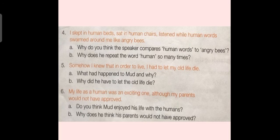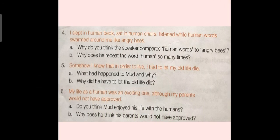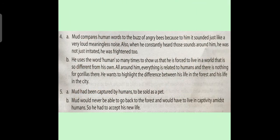Question No. 5: "Somehow I knew that in order to live I had to let my old life die." Question A: What had happened to Mud and why? Answer: Mud had been captured by humans to be sold as a pet. Question B: Why did he have to let the old life die? Answer: Mud would never be able to go back to the forest and would have to live in captivity with humans. So he had to accept his new life.